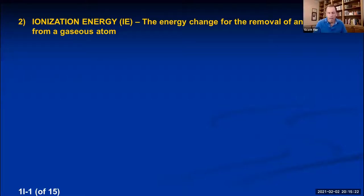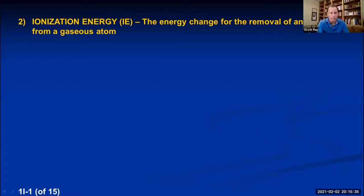We've been talking about periodic trends — properties of the chemical elements that you can predict about their atoms based upon their position on the periodic table. We talked yesterday about atomic radii, which you'll see on your next homework assignment due tomorrow. Today we're going to talk about two other trends: ionization energies and electron affinities.